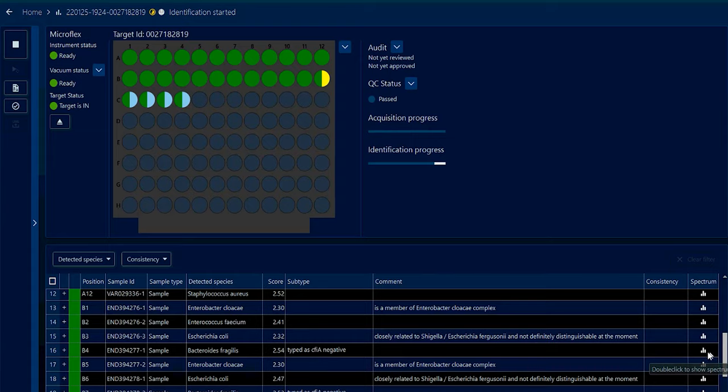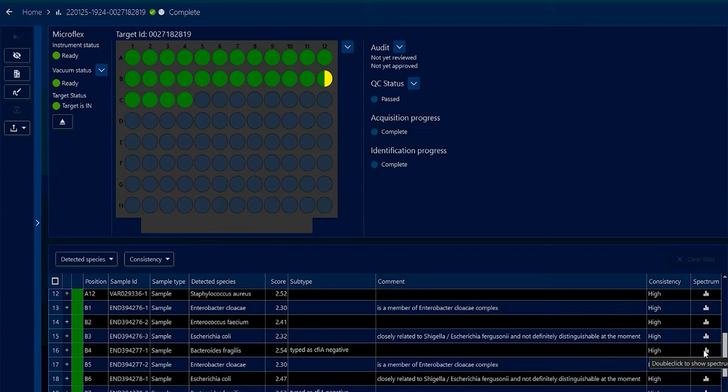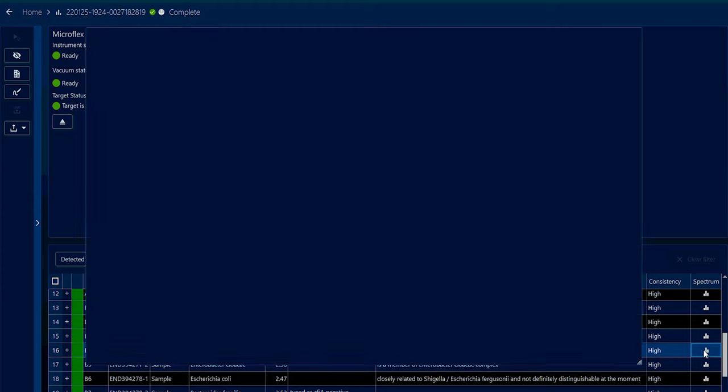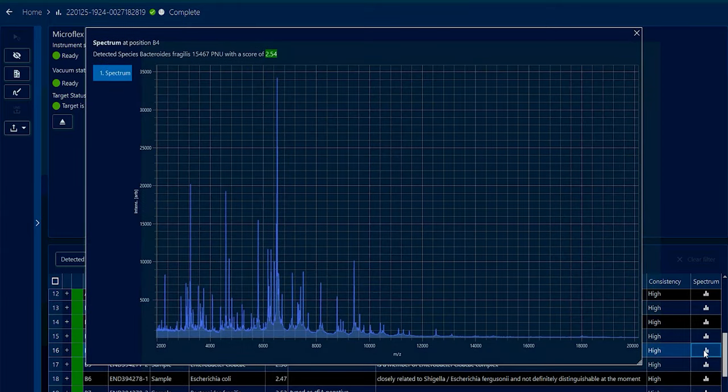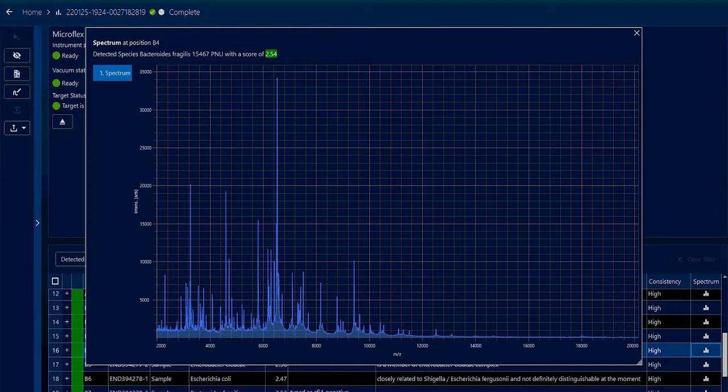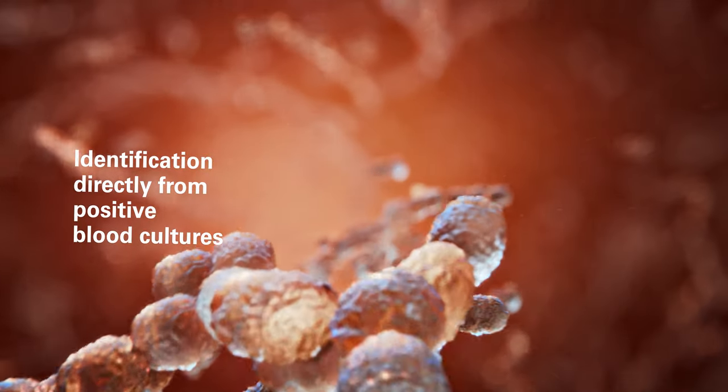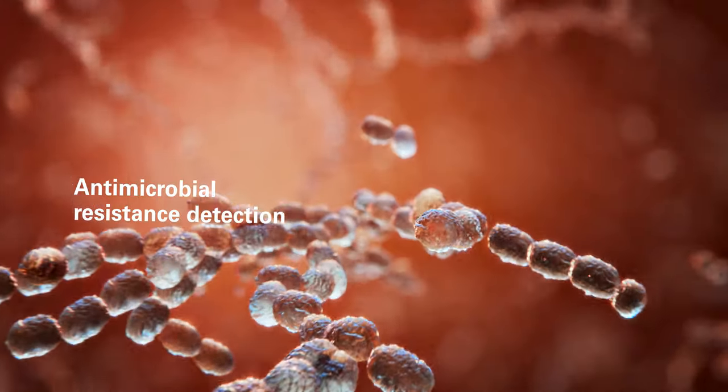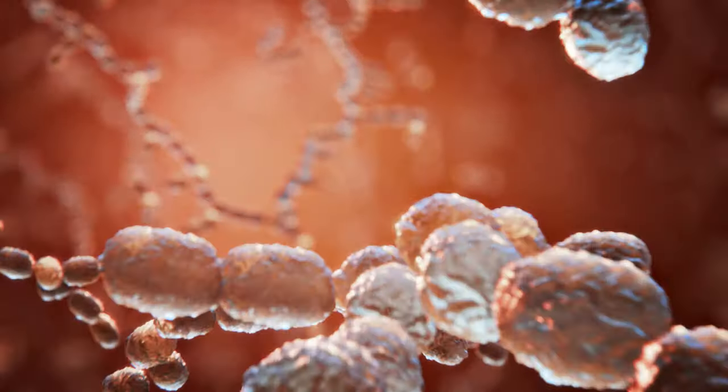In addition, Bruker's continuous innovations have brought MALDI-TOF beyond microbial identification from standard cultures. The MALDI Biotyper Sirius system offers tools that enable identification directly from positive blood cultures, antimicrobial resistance detection, or lipid analysis.